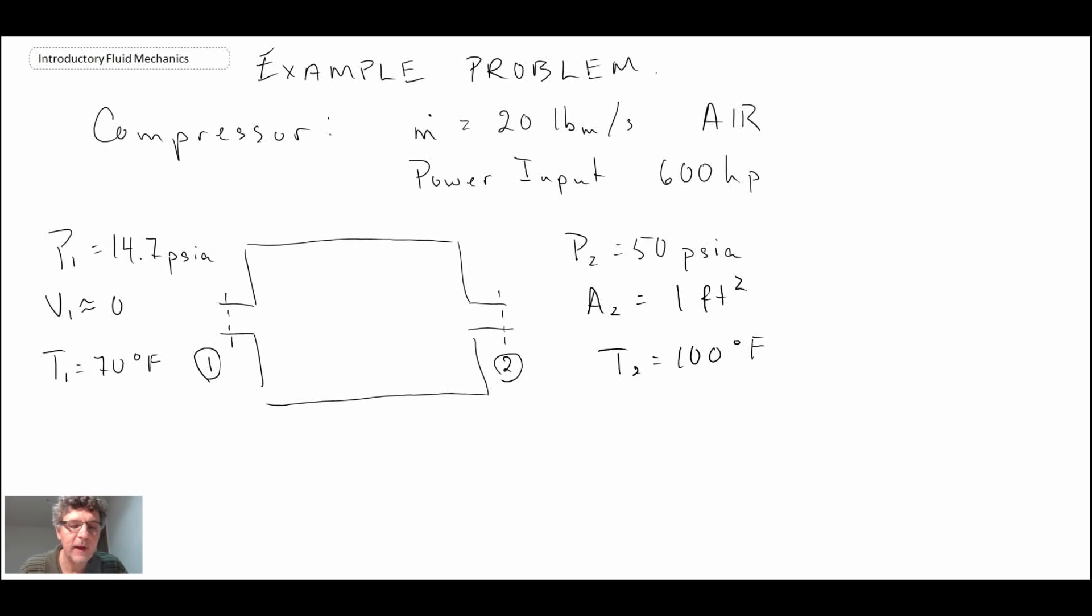Okay, so there we have what our air compressor looks like in terms of the input and exit properties. What I'm going to do now is draw the control volume around the air compressor, and I've carefully drawn this so that the flow coming in is normal to the control volume itself as well as the flow leaving.